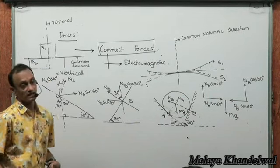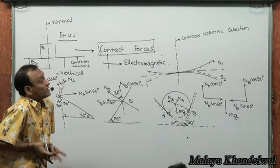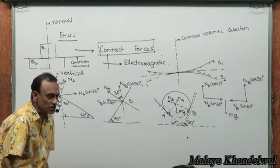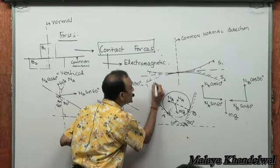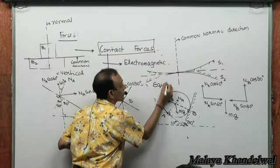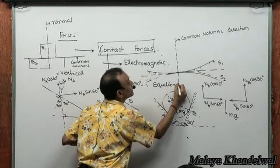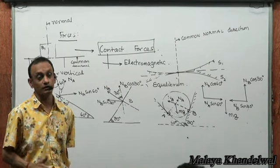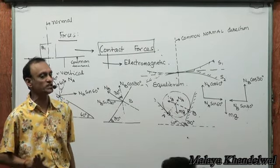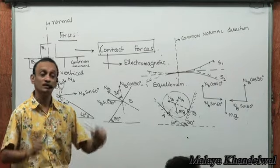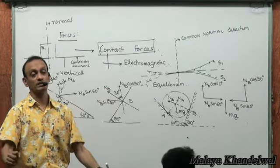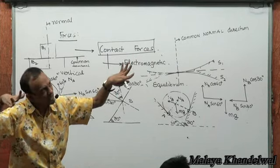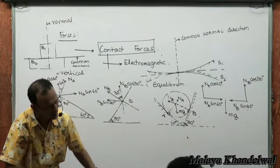If the sphere is in equilibrium, all vertical forces must add to zero and all horizontal forces must add to zero. Equilibrium does not mean being at rest — it means zero acceleration, which could include moving at constant velocity. Equilibrium means no net force acting, so acceleration is zero and velocity is constant.